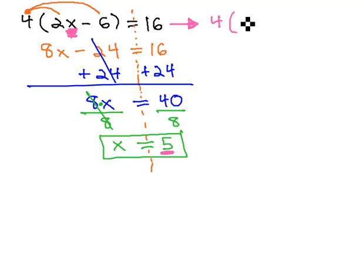Let's see what happens when we do that. The problem was 4 times 2x, which is now 5, minus 6, and we hope that equals 16.